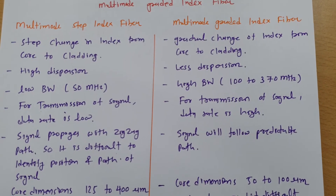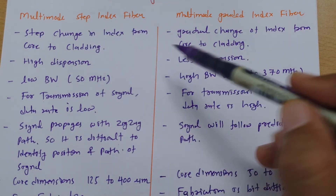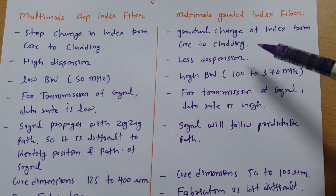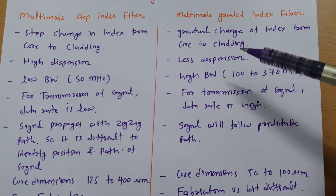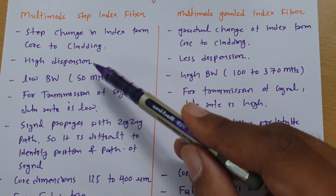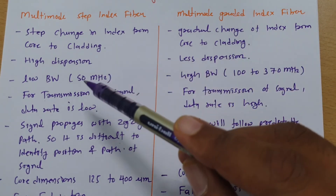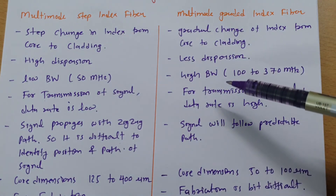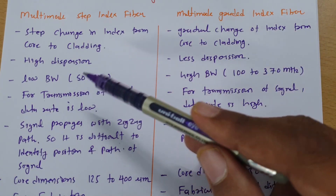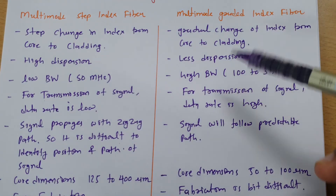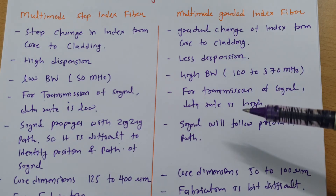To summarize the comparison: the index changes as a step in Multi-mode Step Index, while it changes gradually in Multi-mode Graded Index — either parabolic or triangular. Dispersion is high for Step Index and less for Graded Index multimode fibre. Bandwidth is low for Step Index — about 50 MHz — while it is about 100 to 370 MHz for Graded Index. Accordingly, data rate is low for Step Index and high for Graded Index.